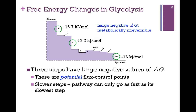There are three steps, circled in green, that have large negative changes in delta G. Remember, these are potential flux control points — our best options for controlling the flow through the pathway because of the large negative delta G. That is, they are metabolically irreversible, going in one direction only, and we can have the largest impact downstream. These tend to be the slower steps; the enzymes are working at maximum capacity and can't go any faster, so the flow through the pathway can only be as fast as the slowest step. Steps one, three, and ten in glycolysis are possible control points. In a later video, we'll see which step is the actual control point.